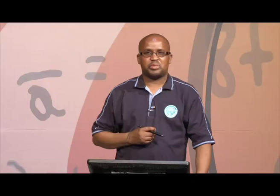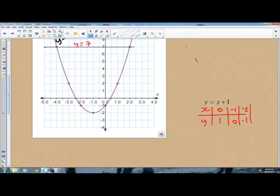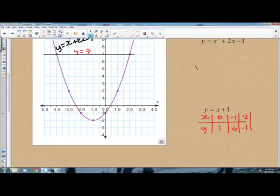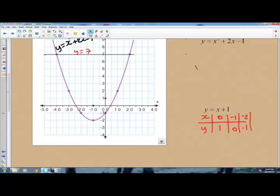Welcome back. We are continuing to draw the line y equals x plus 1. We plot the points: 0, 1 is here; negative 1, 0 is here; and negative 2, negative 1 is here. Joining these points gives the graph of the line y equals x plus 1, and we have now drawn both required lines.